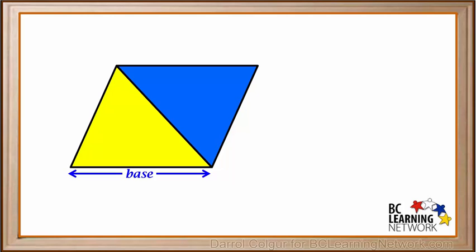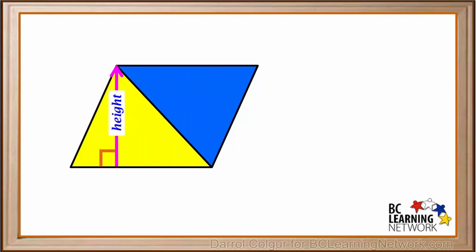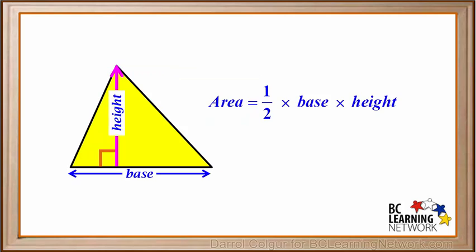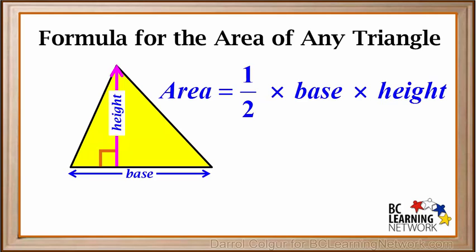The base of the yellow triangle is the same as the base of the parallelogram. And the height of the parallelogram is the distance from the bottom to the top, perpendicular to the bottom, and this is the same way we measure the height of the yellow triangle. So the area of this triangle is a half times the base times the height, both measured like this. We can say that the area of any triangle is a half times the base times the height, where the base is the bottom and the height is perpendicular to the base and drawn to the top of the triangle.